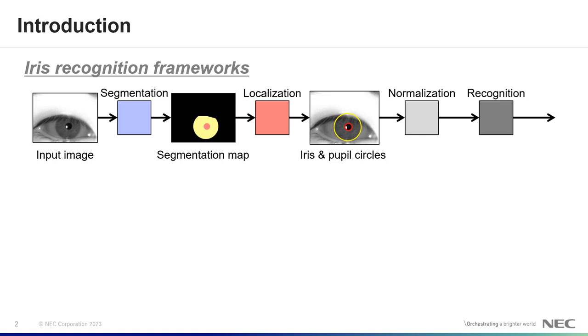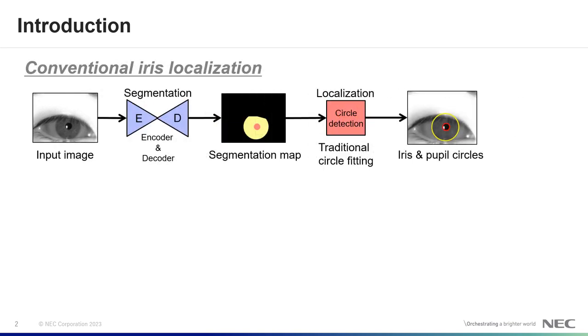Iris recognition is one of the most accurate biometric recognition methods. It is used for many applications. However, its processing has kept traditional frameworks that include segmentation, localization, normalization, and recognition. In this paper, we focus on the segmentation and the localization processing.